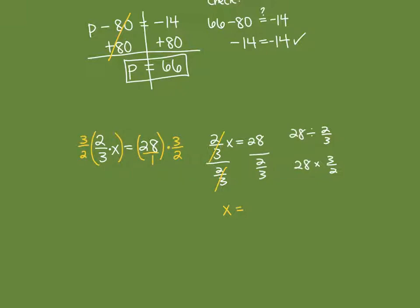The whole point of a reciprocal is that the product of a number and its reciprocal is 1. Multiplying across: 2 times 3 is 6, and 3 times 2 is also 6, so the fraction equals 1. You can also use cross-reducing: 3 divided by 3 is 1, and 2 divided by 2 is 1. Either way, the left side becomes 1x.